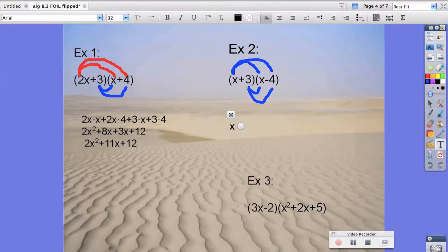and last. So that gives us x times x, plus x times negative 4, plus 3 times x, plus 3 times negative 4, which simplifies to x squared,